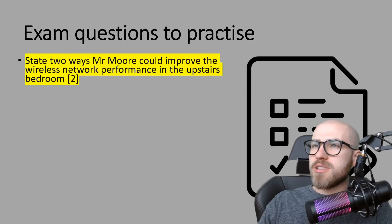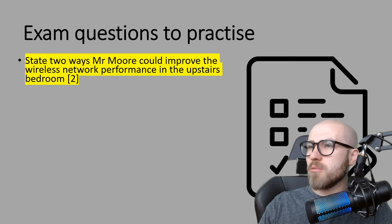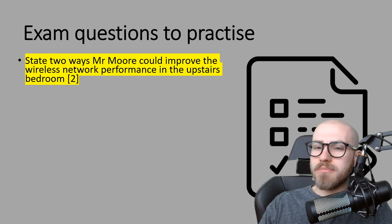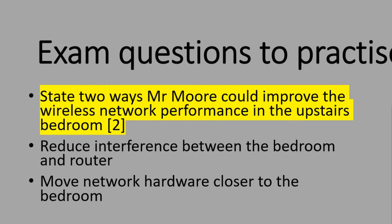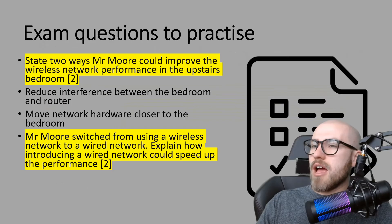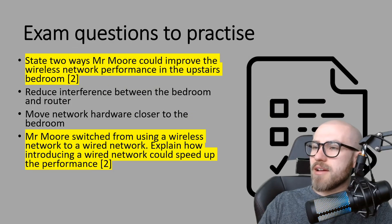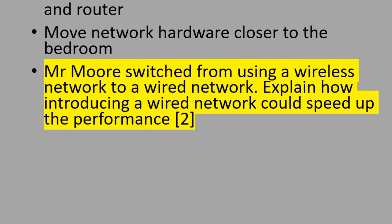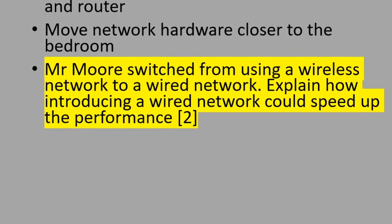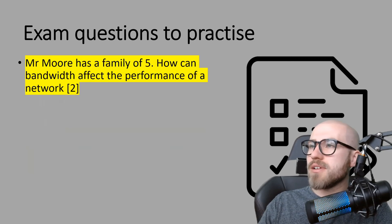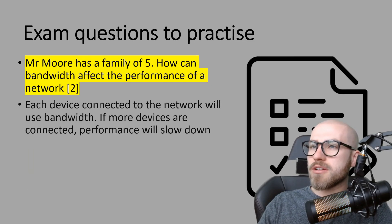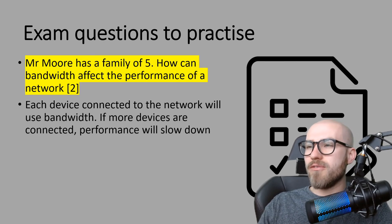Let's go through the answers. First, to improve wireless performance in the upstairs bedroom, you could reduce the interference between the bedroom and the router, and you could move your network hardware closer to the bedroom. Second, wired networks are not affected by interference, which will provide a consistent, strong connection. Third, each device connected to the network will use bandwidth, so if more devices are connected, performance will slow down.